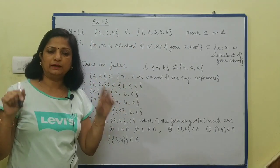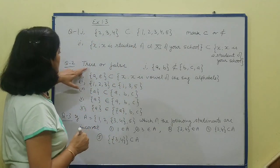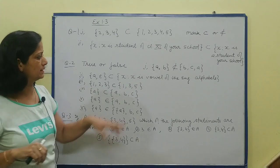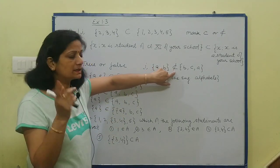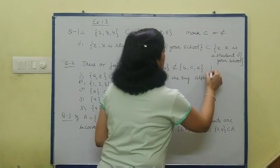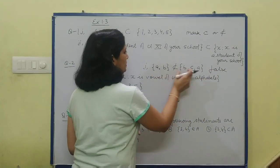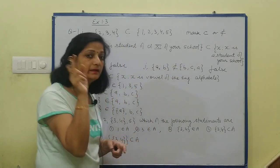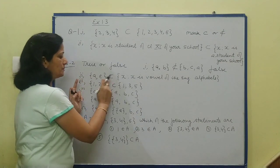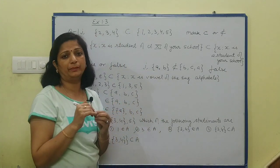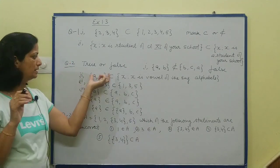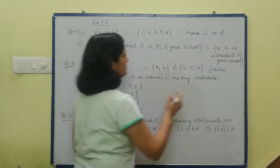इसी type से 2-3 parts और हैं, वो आप try कर लेंगे — कोई problem होगी तो आप comment कर सकते हैं. Second question में हमें conditions given हैं, हमें बताना है True या False. {a, b} is not a subset of {b, c, a} — this is false, क्योंकि element a और b दोनों उसमें belong करते हैं — यानि यह subset है, लेकिन sign है 'not a subset', so it is false. {a, e} is a subset of vowels of the English alphabet — vowels हैं a, e, i, o, u — so that is true. {1, 2, 3} is a subset of {1, 3, 5} — obviously false, क्योंकि 2 उस set में belong नहीं करता।